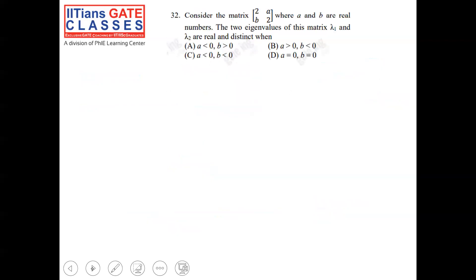Coming to the next question, which is from eigenvalues and eigenvectors under linear algebra. They have given a matrix with entries a, b and 2 where a and b are real numbers. The two eigenvalues λ₁ and λ₂ are real and distinct only when certain conditions on a and b are satisfied.